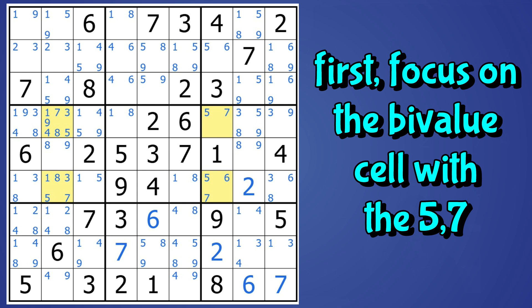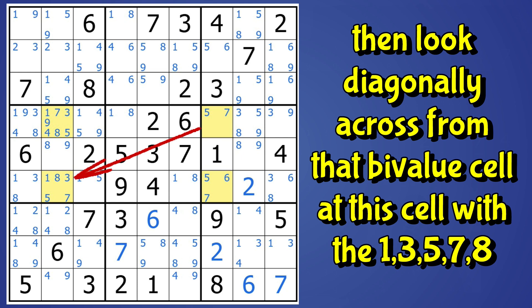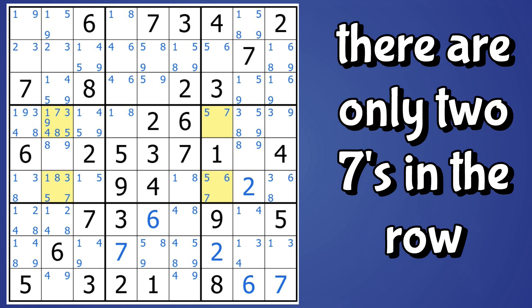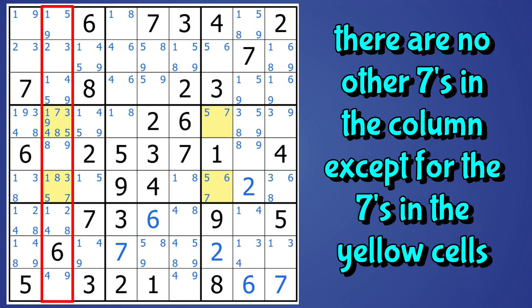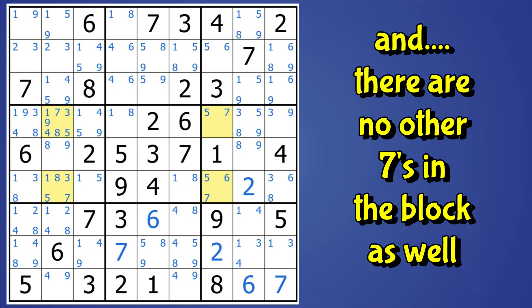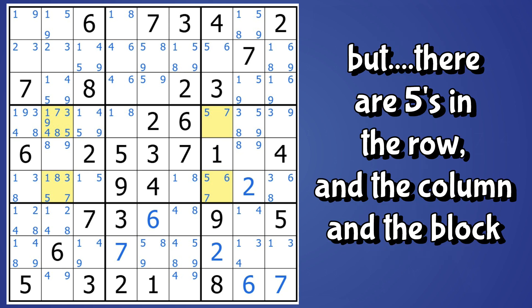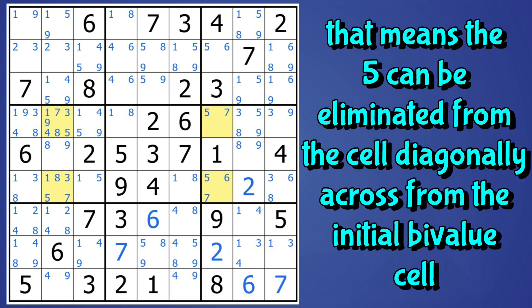The way this works is to focus on the bivalue cell with only a five and a seven, then look diagonally across from that cell. Looking at this cell with a five-seven plus a one, three, and eight — if we look across the row, there are only two sevens in the row, and looking up and down the column, there are no other sevens in the column either. Just the sevens in the highlighted cells, and in the block there are no other sevens. But there are fives in the row, column, and block. So the other candidate — the five — can be eliminated.